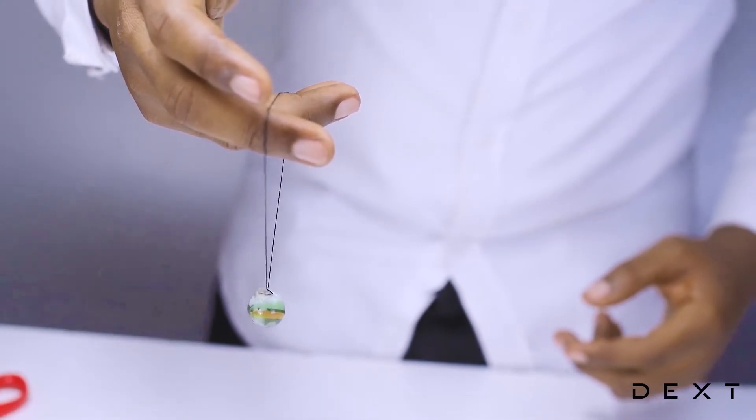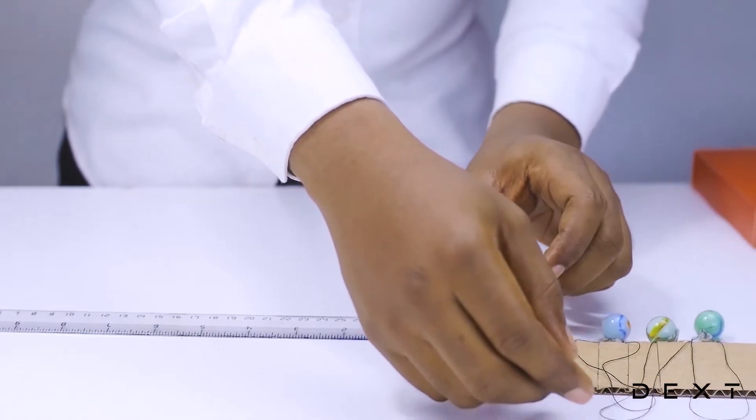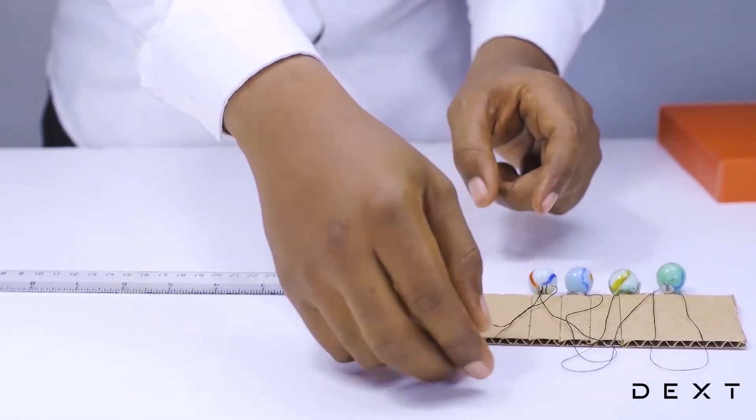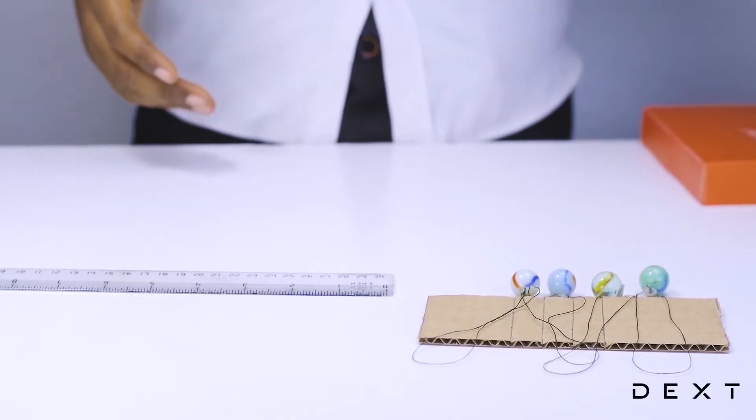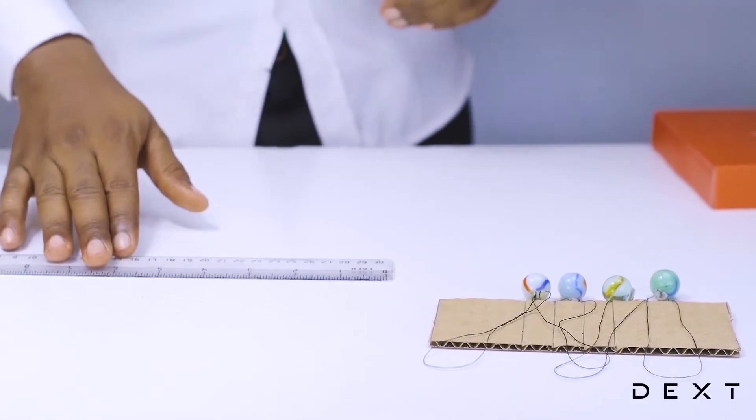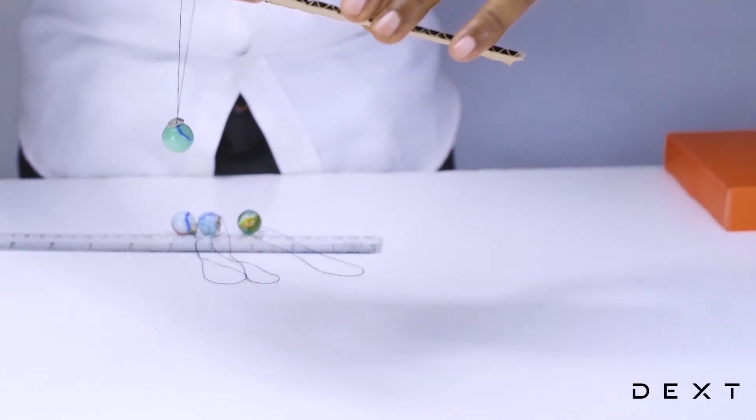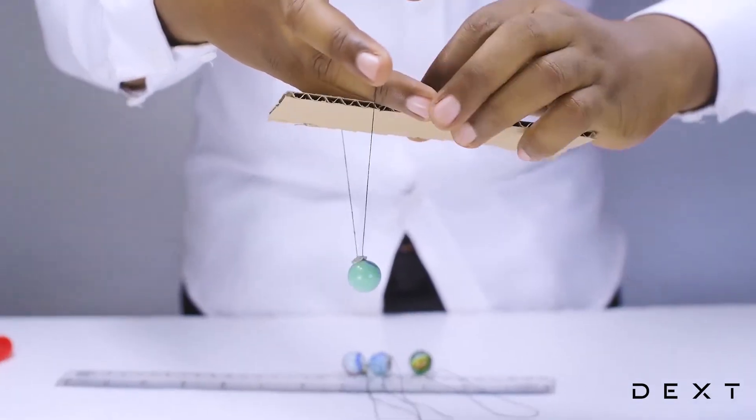Once you are done, you would have something that looks like this. Make sure it does not fall off when you give it a simple swing. We are going to do this for all four of our marbles. And once we are done with this, we are going to place them on our corrugated cardboard.